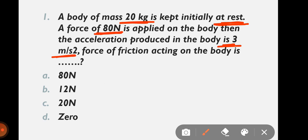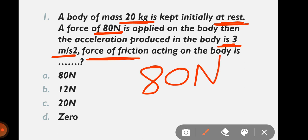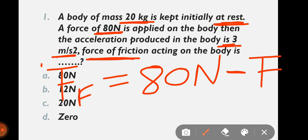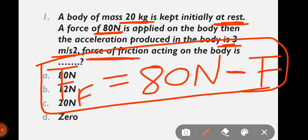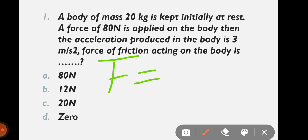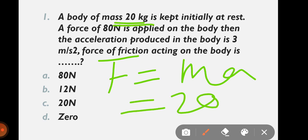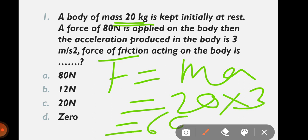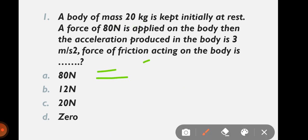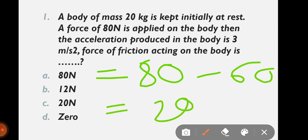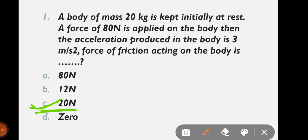Force of friction equals applied force minus force producing acceleration. Applied force is 80 Newton. Using Newton's second law, F = ma, with mass 20 kg and acceleration 3, we get 60 N. So friction = 80 N minus 60 N = 20 N. The correct option is C, that is 20 N.